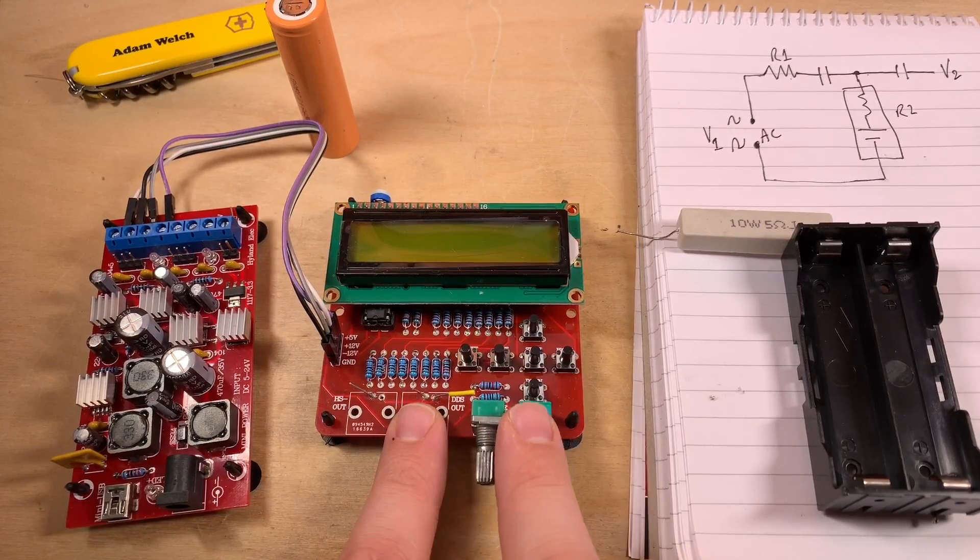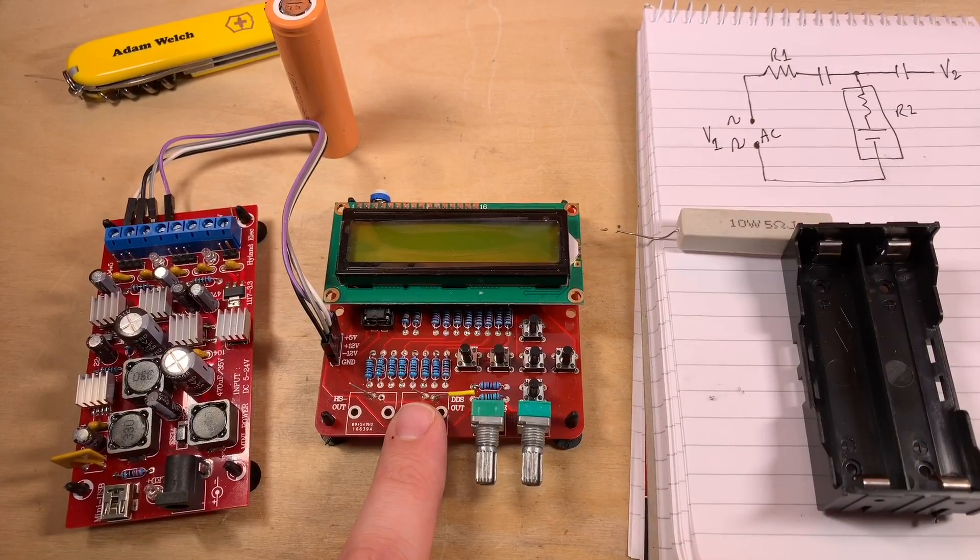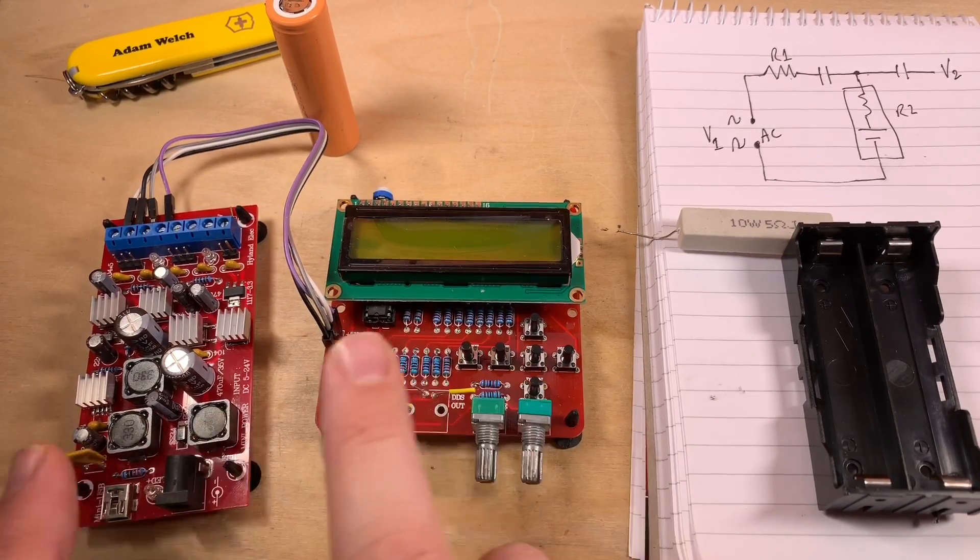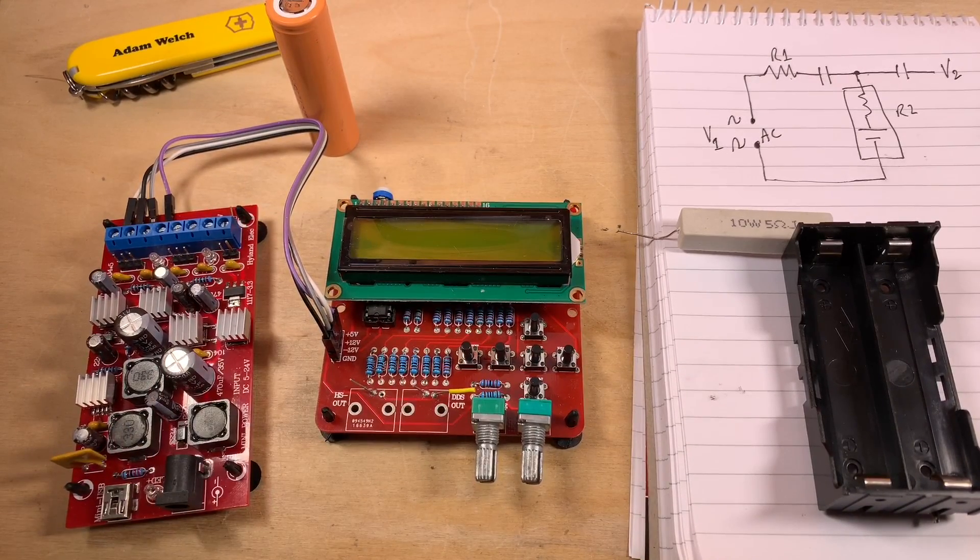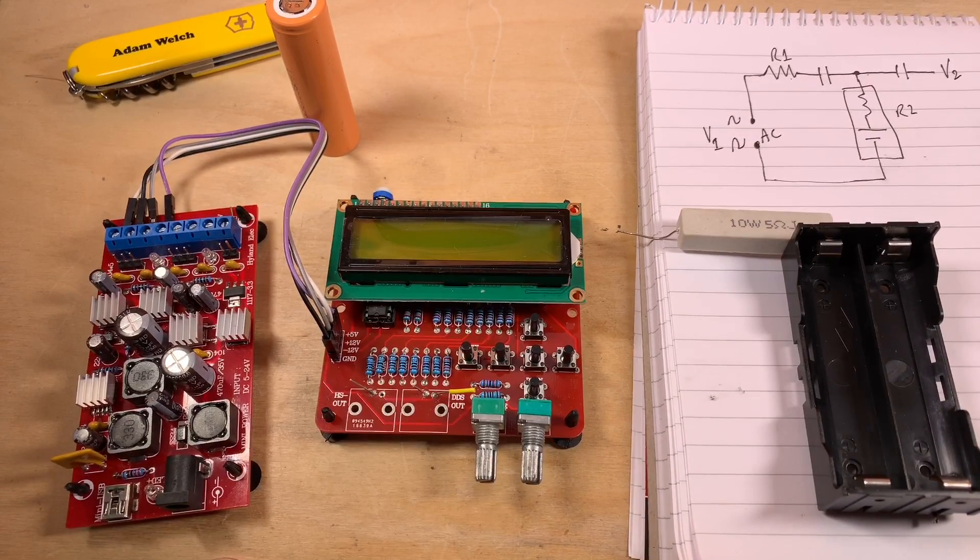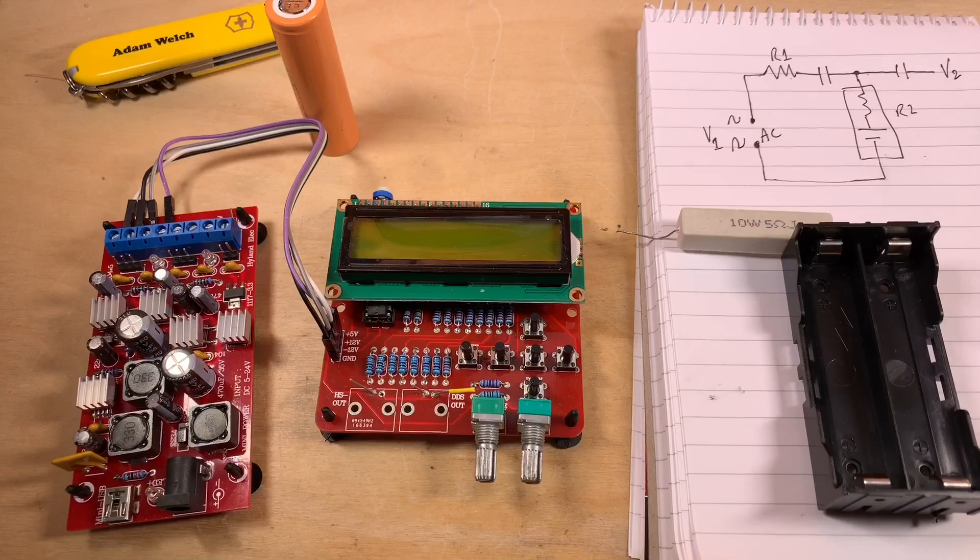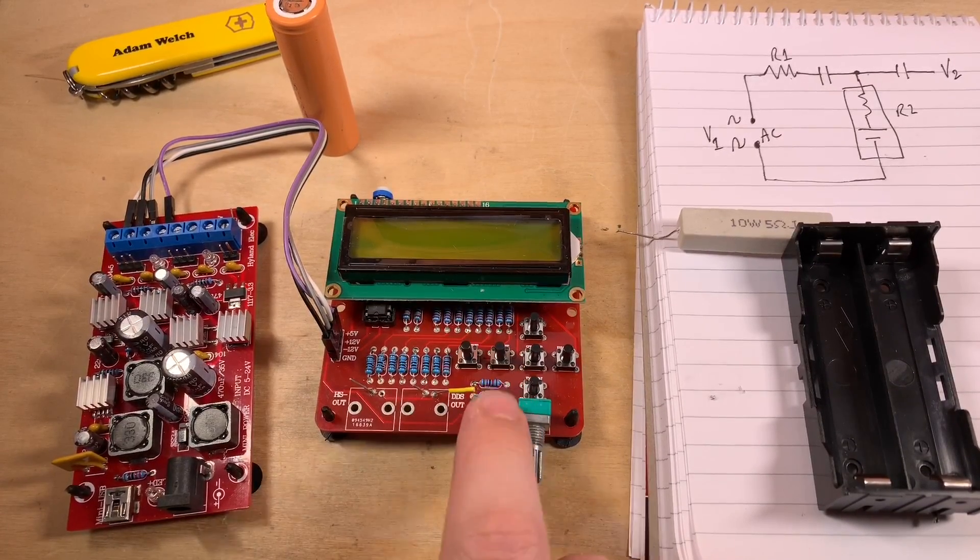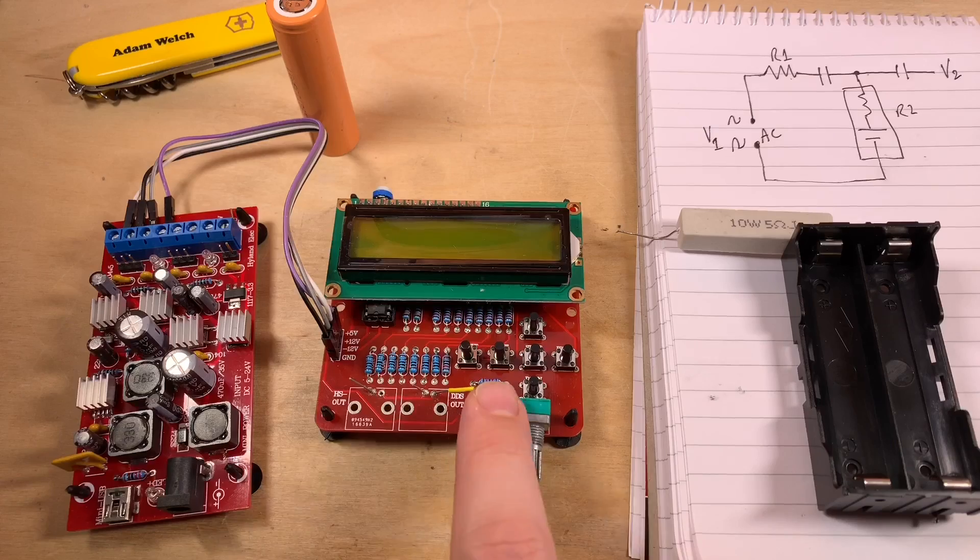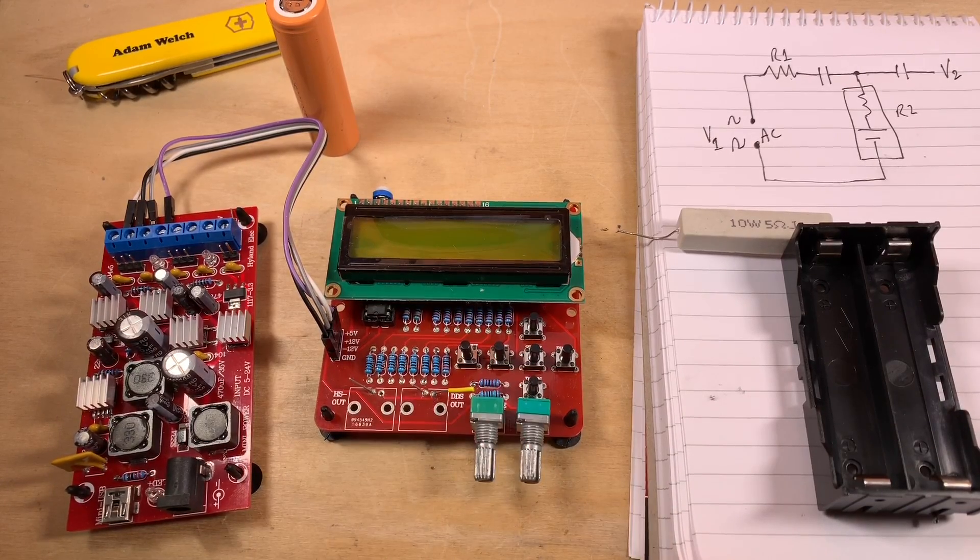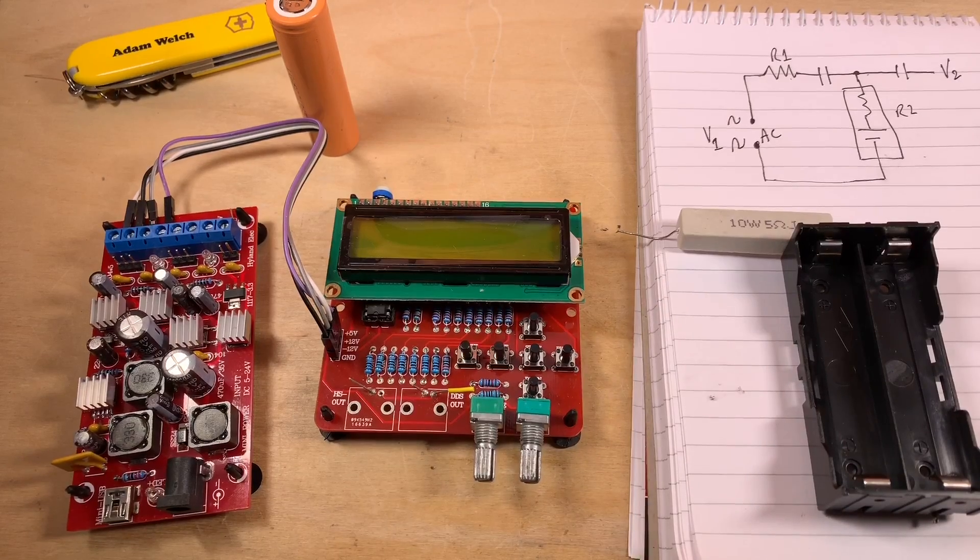Now I'm going to use this function generator to create an AC signal here, which I should be able to measure. That is powered by this split rail power supply here, because it needs positive 12 volts, negative 12 volts, and in fact it needs 5 volts as well. And this power supply can supply all of that at the same time. Now you'll remember, if you're a long-term viewer, that I had a few issues building this function generator, but this is the working one.